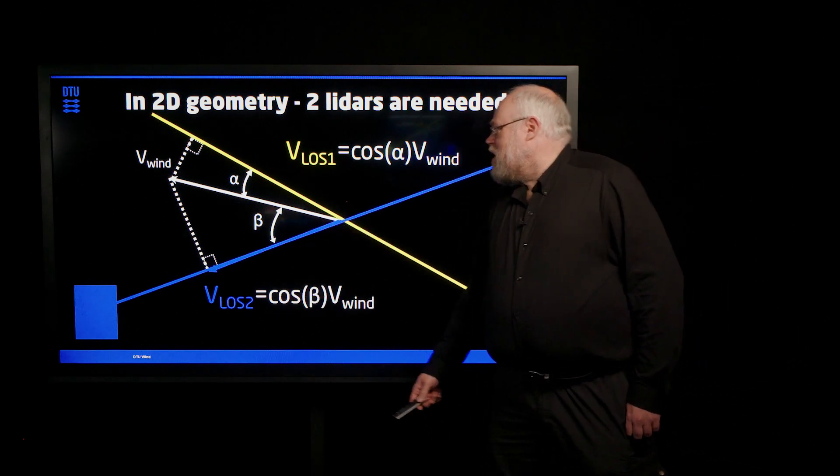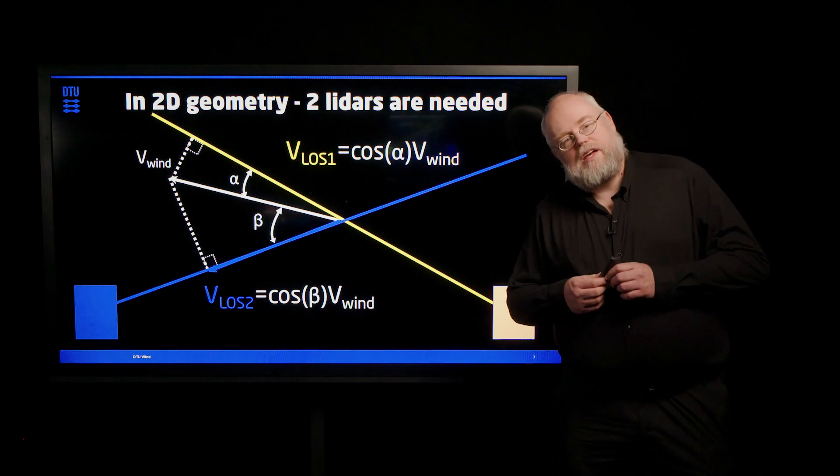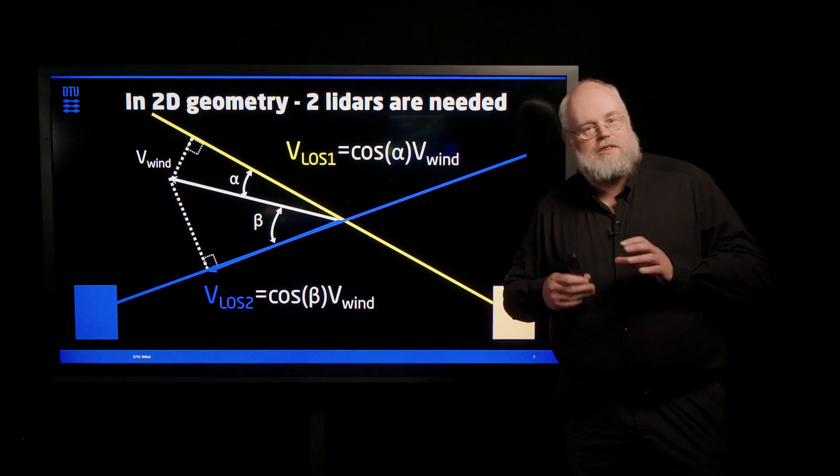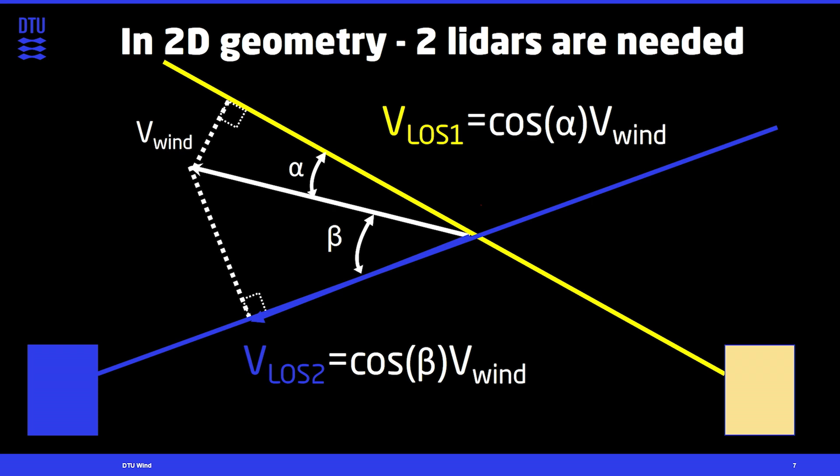You have these two measurements and you aim for getting the two components of the wind in two orthogonal directions. So it's about inverting a projection matrix. We will not go into the details here today.